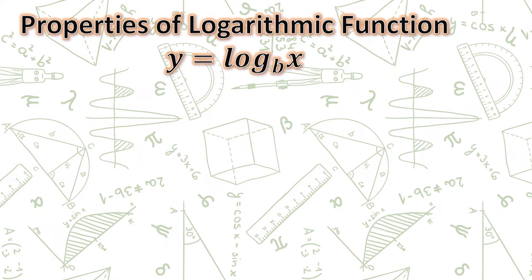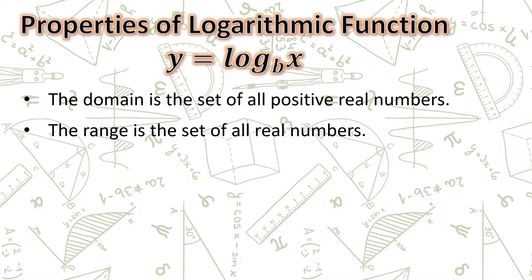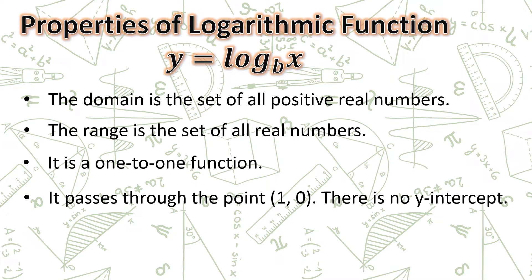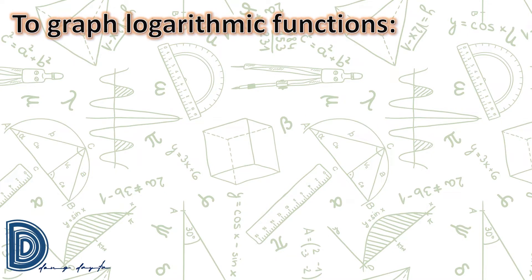Let us start with the properties of the logarithmic function of the form y = log_b(x). The domain is the set of all positive real numbers. The range is the set of all real numbers. It is a one-to-one function. It passes through the point (1, 0) and there is no y-intercept. The vertical asymptote is the line x = 0 and there is no horizontal asymptote.